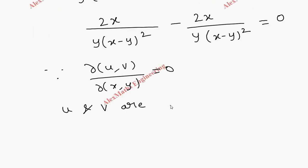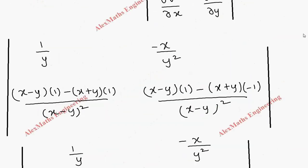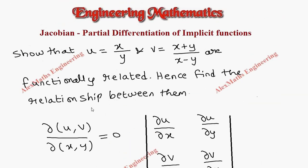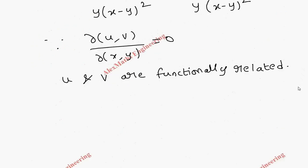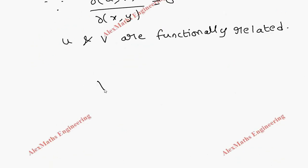So we completed the first part. Now we have to find the relationship between u and v. There is a relationship between u and v. Let's take v, which is (x+y)/(x−y).